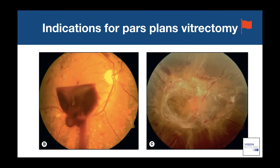Vitrectomy has beneficial roles: by removing the vitreous scaffold, new vessels can no longer grow into it. Here you can see neovascularization with new vessels growing into the vitreous forming fibrovascular complexes. The problem with the fibrovascular membrane is that it contracts and, in essence, rips the retina off the back of the eye — a failure of the diabetic screening service to prevent patients reaching this state.